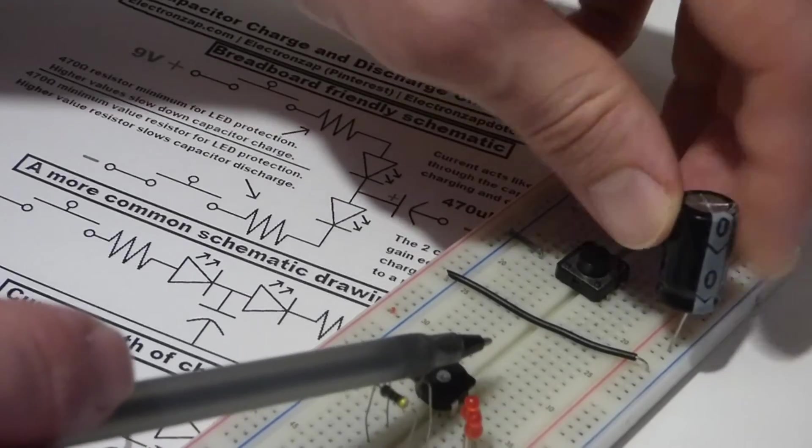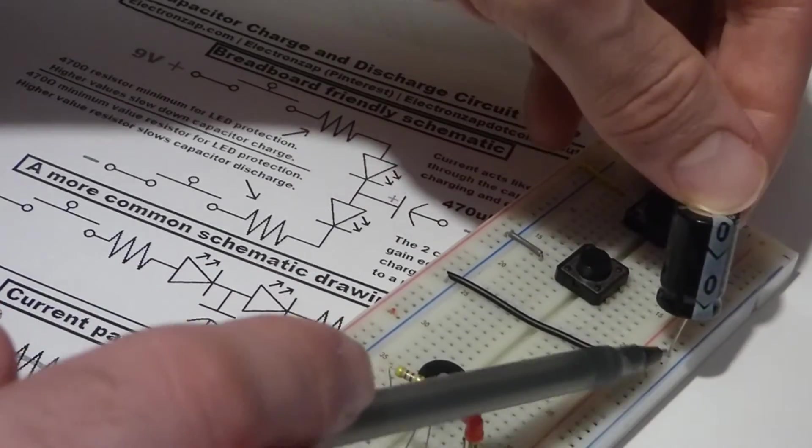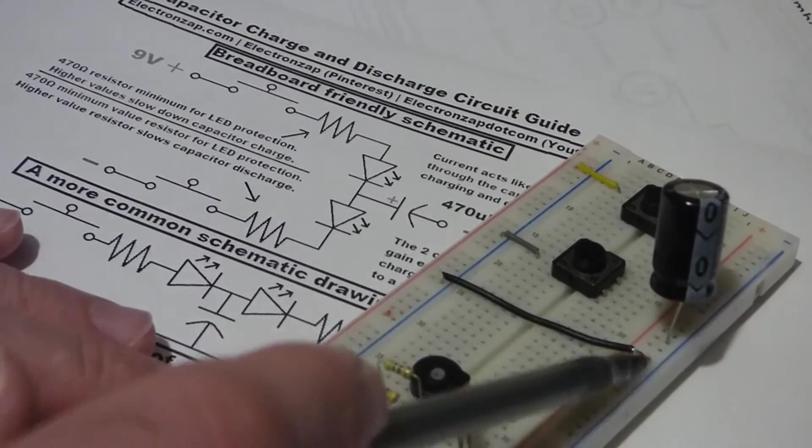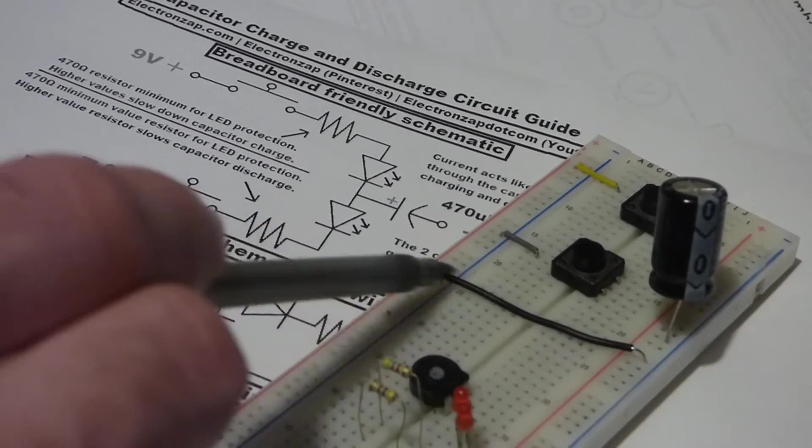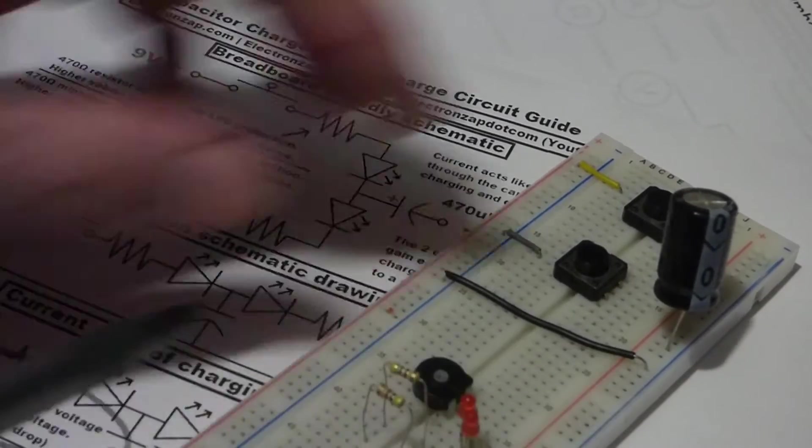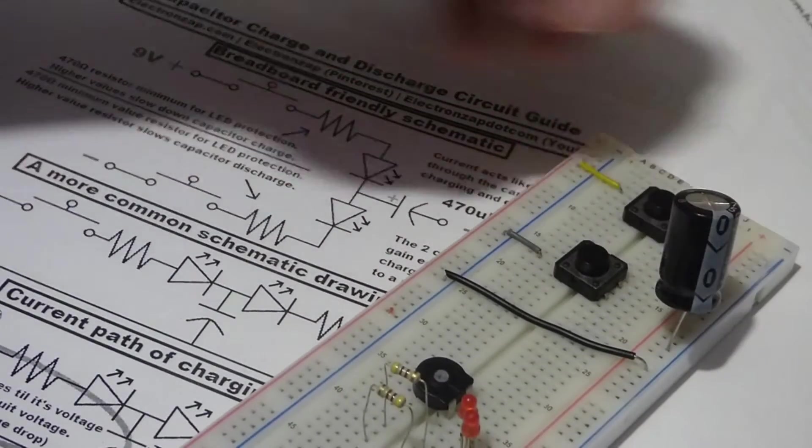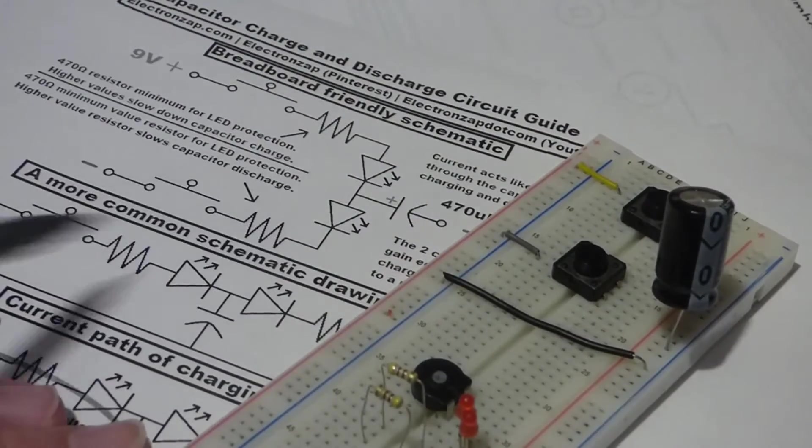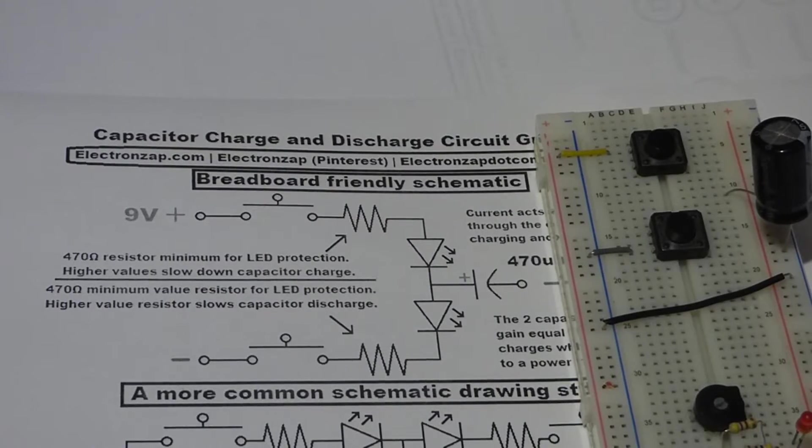And then the negative side of the capacitor I'm just going to put it right into the negative side of the breadboard. As you can see here, I got both negative sides of the board connected, so I only have to plug the battery into one side. But that's how I get the capacitor in the middle of the circuit here.